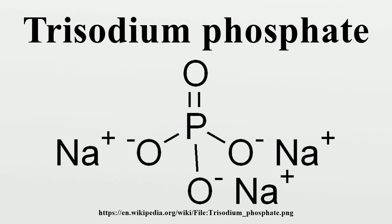Trisodium phosphate was at one time extensively used in formulations for a variety of consumer-grade soaps and detergents, and the most common use has been in cleaning agents. The pH of a 1% solution is 12, and the solution is sufficiently alkaline to saponify grease and oils. In combination with surfactants, TSP is an excellent agent for cleaning everything from laundry to concrete driveways, making it the basis for a plethora of cleaning products sold in the mid-20th century.